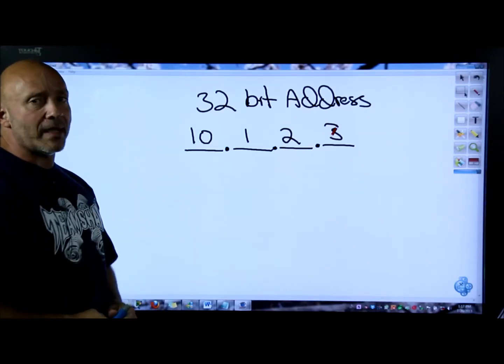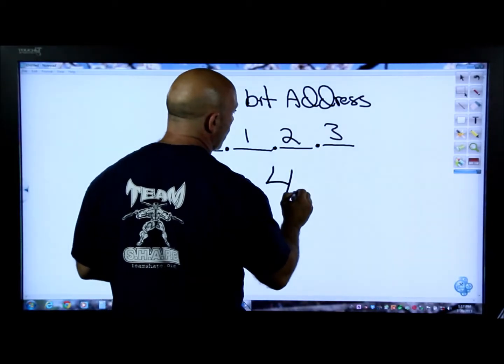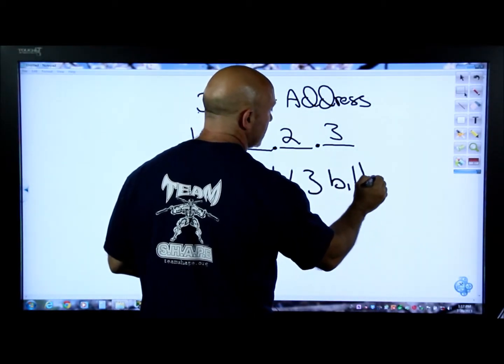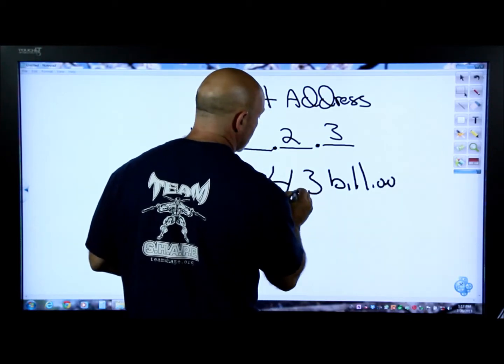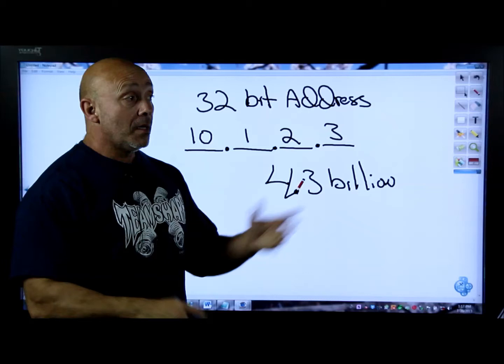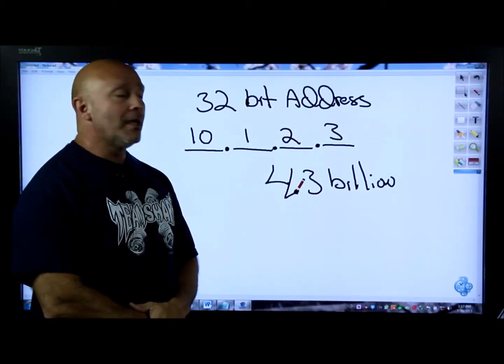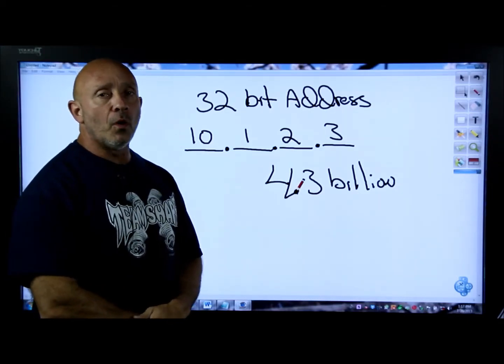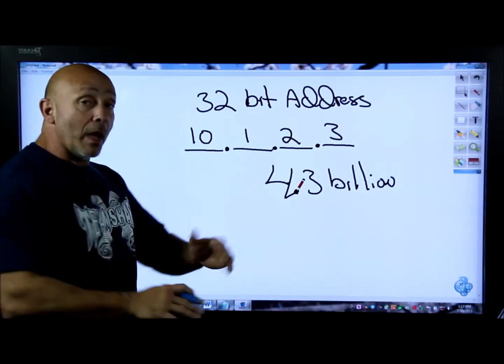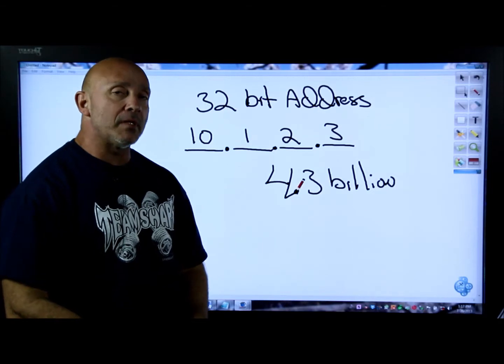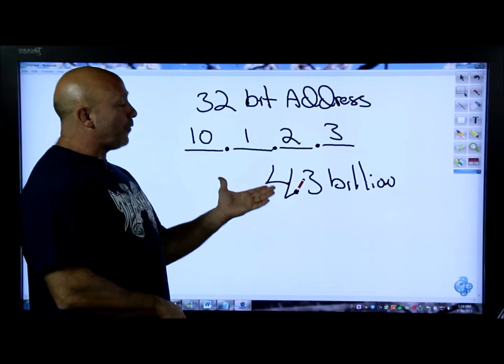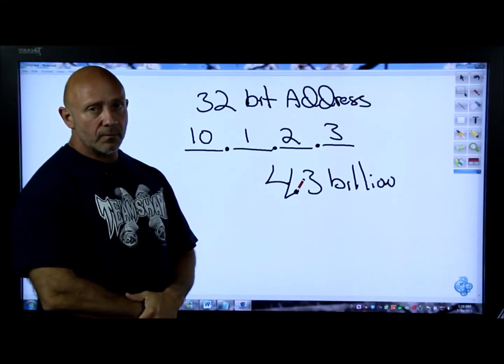We'll talk about classes in a second. So essentially that is the IPv4 address - 32-bit address. It can hold up to 4.3 billion addresses, which by the end of, or in the next 12 months or so, that's it. We're done. No more IPv4 addresses to be handed out. So that's why we moved into IPv6 - one of the reasons that we moved into IPv6 - because of the size of the address.